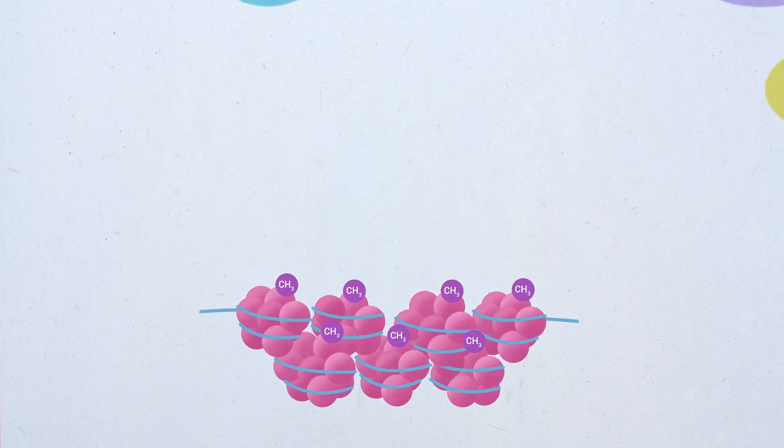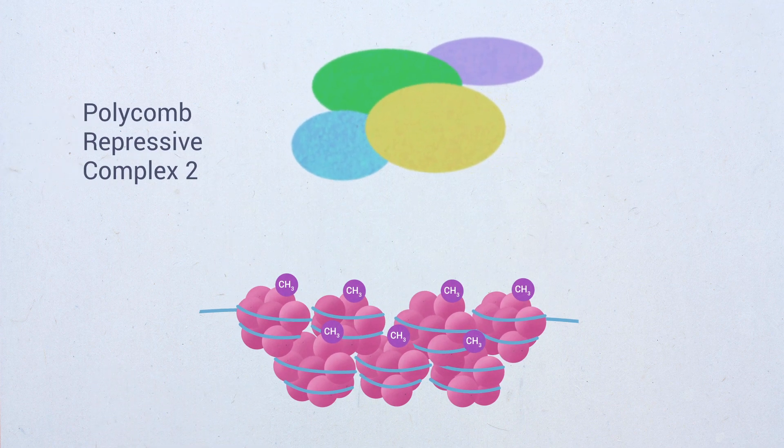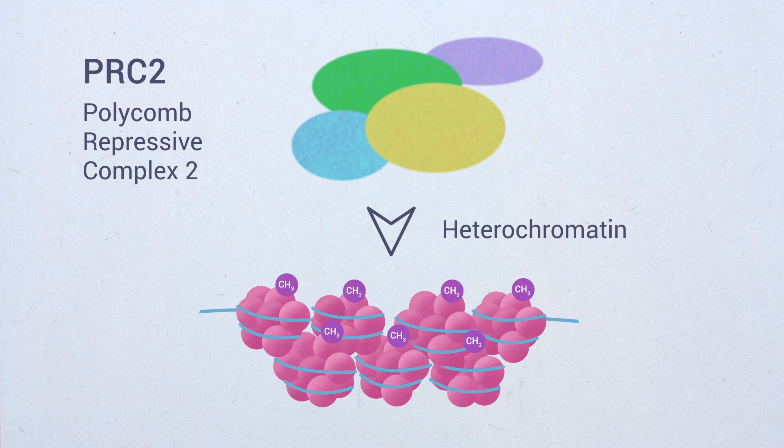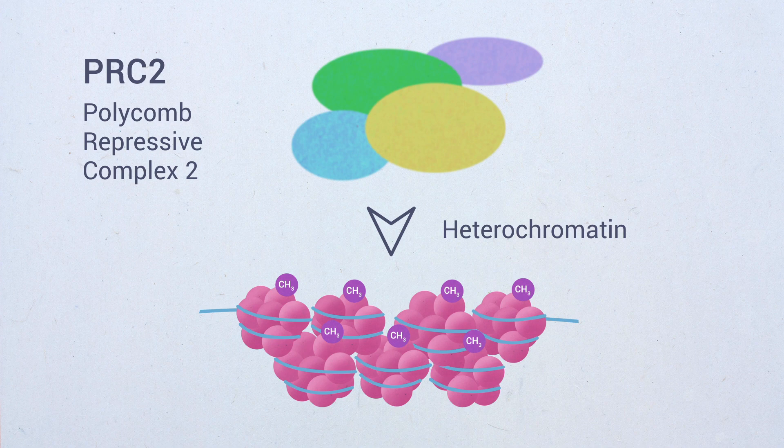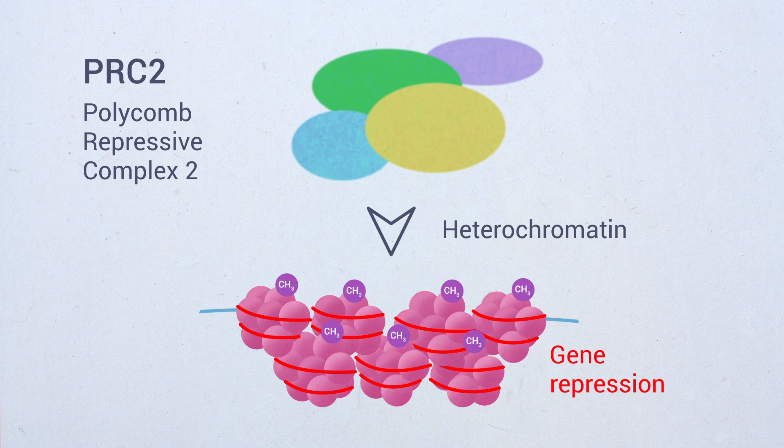A group of proteins called the Polycomb Repressive Complex II, or PRC2, is responsible for introducing and maintaining heterochromatin regions and for locally spreading a transcriptionally repressive state.